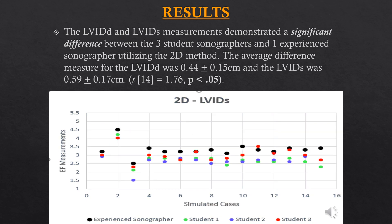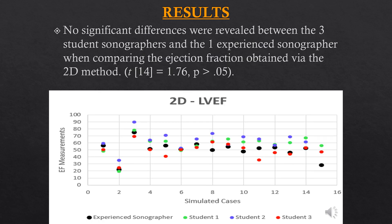This slide demonstrates the end-systolic 2D measurements, and again notice how the experienced sonographer's measurement was significantly larger across all 15 pathologies. After reviewing the images, I noticed that the students were actually ending the left ventricular measurement at the papillary muscle instead of including it, which would lead to a larger posterior or inferior lateral wall segment and in turn result in a larger ejection fraction — as noticed by this scatter plot. Though the ejection fraction measurement was not statistically significant, it was visually significant because the ejection fraction is lower for the experienced sonographer due to those erroneous measurements.